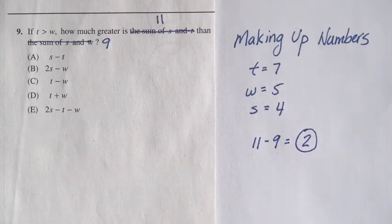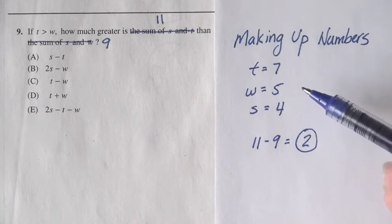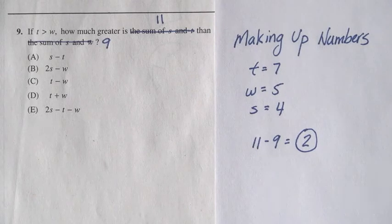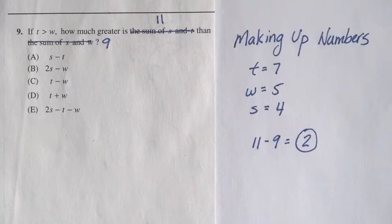So, we know the correct answer to the question is 2. Of course, none of the answer choices say 2. They all have s's, t's, and w's in them. But we're going to use the numbers that we've made up for s, t, and w to figure out which answer choice actually says 2.